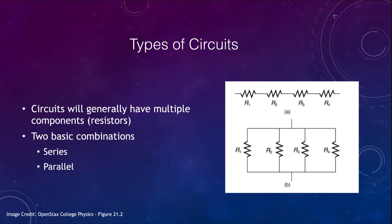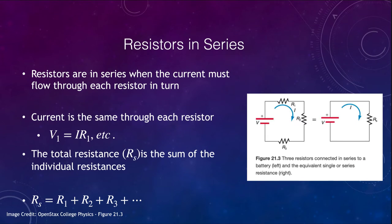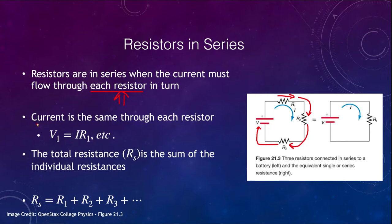Let's start off looking at series resistors. When we have resistors in series, it means that the current must flow through each resistor in turn. It has to flow through the first resistor in order to get to the second, and through both of those to get to the third. This means the current is the same through each resistor. So the current through R1 is the same as through R2 and R3. We know that V1 equals I·R1, V2 equals I·R2, and so on.